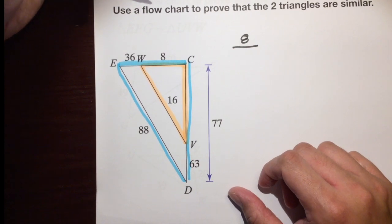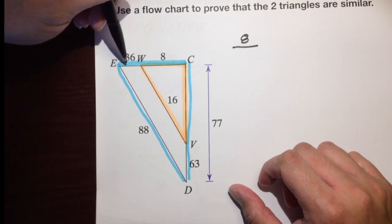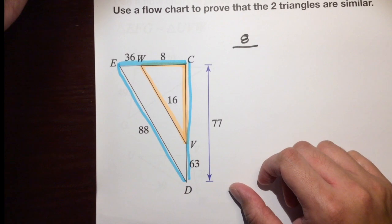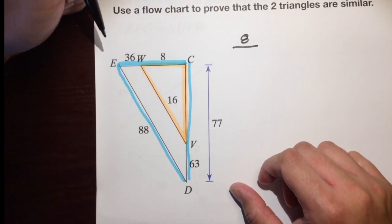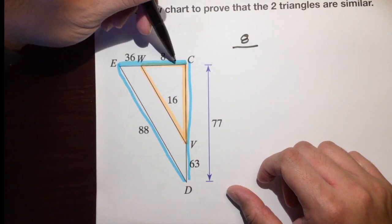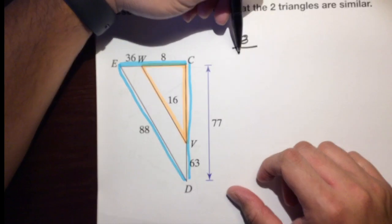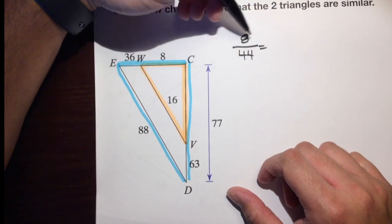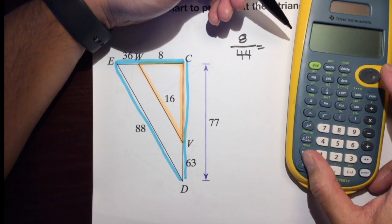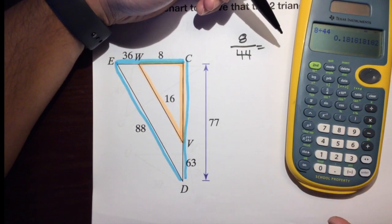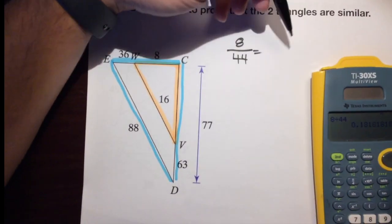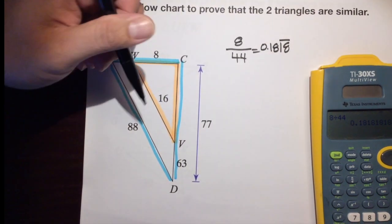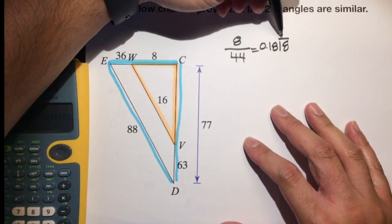You might be tempted to use 36, but 36 is just from here to here. It doesn't say the diagram is drawn to scale. We want the full length, so 36 plus 8 is 44. And we can simplify 8 over 44. Using a calculator, 8 divided by 44 is 0.18 repeating. So our first ratio is 0.18̄. And the reason is: given.